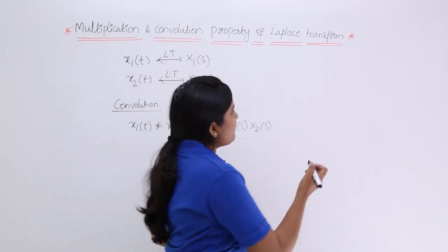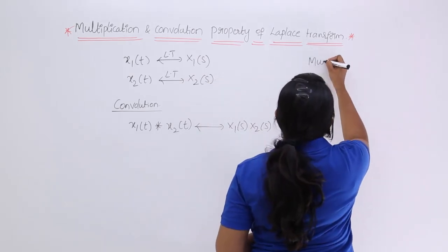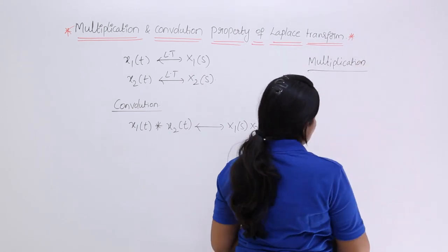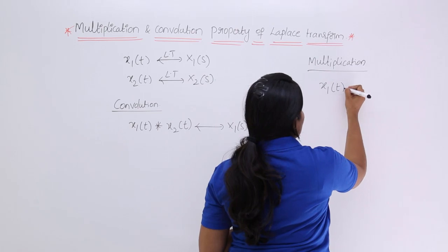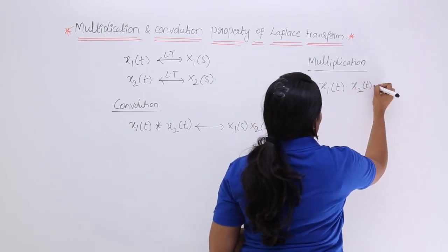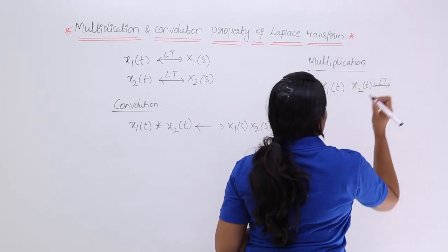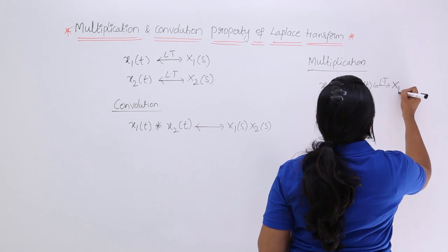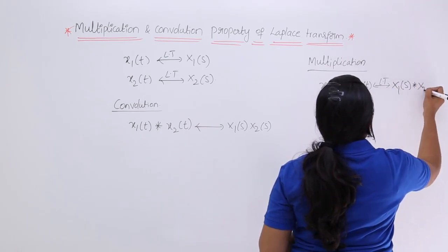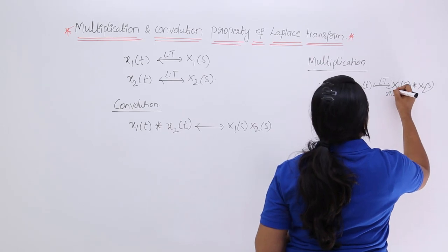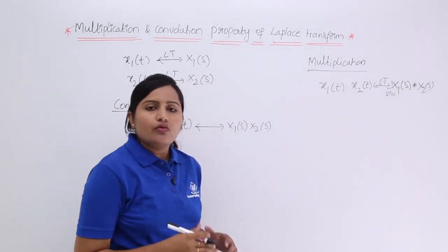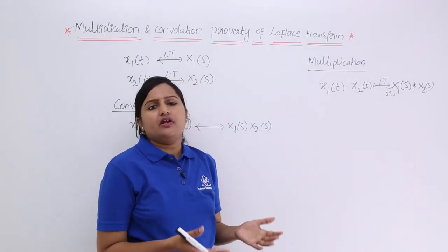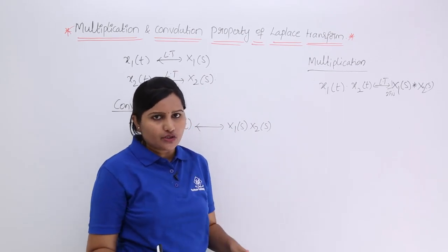Similarly, we have the multiplication property. This multiplication property states that multiplication of two signals in time domain will lead to convolution of spectrums in frequency domain. Convolution of spectrums means x1 of s convolved with x2 of s, divided by some constant 2πj. If you consider 1 by 2πj in the standard equation, you will get 1 by 2πj in the result. In some cases people do not include 1 by 2πj; according to the convention you can choose.